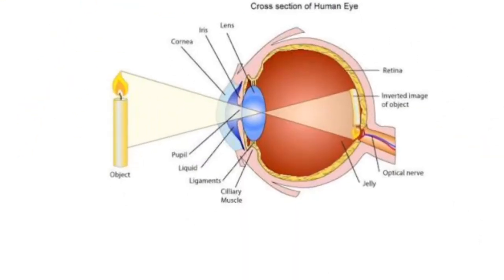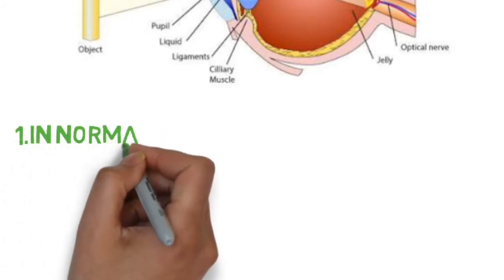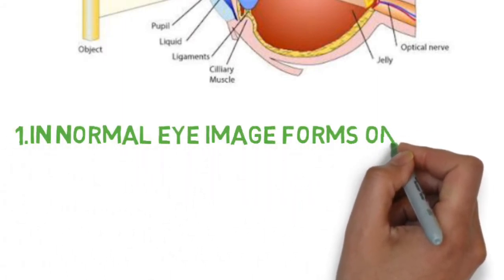Hypermetropia is also called as farsightedness. In normal eye, images are formed on retina.